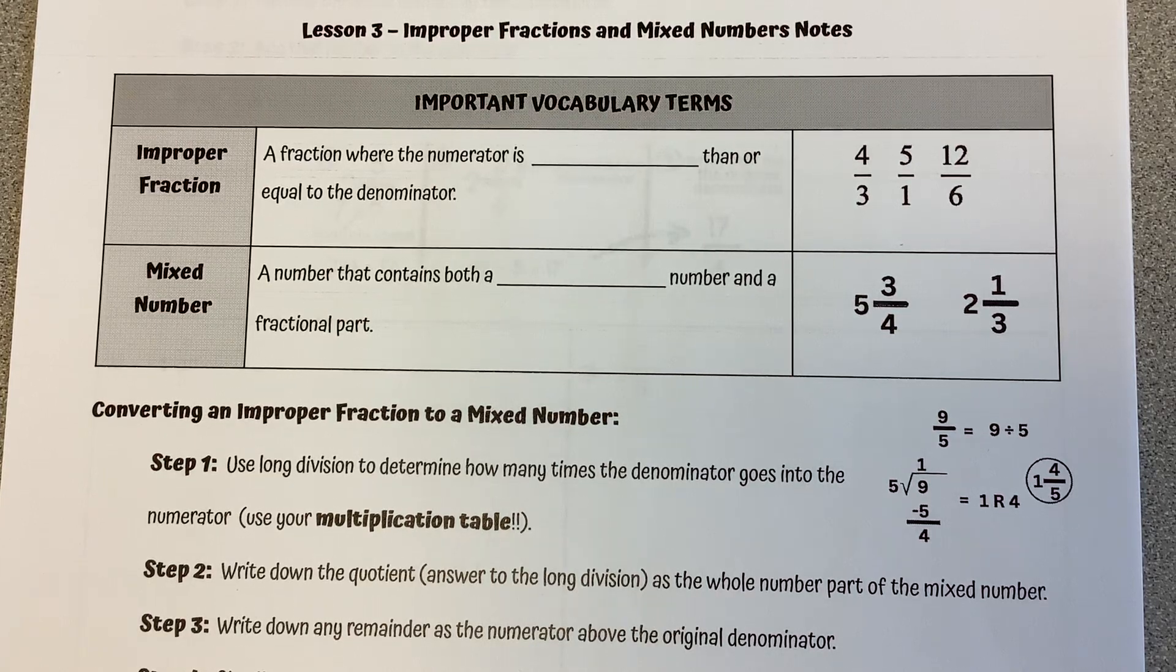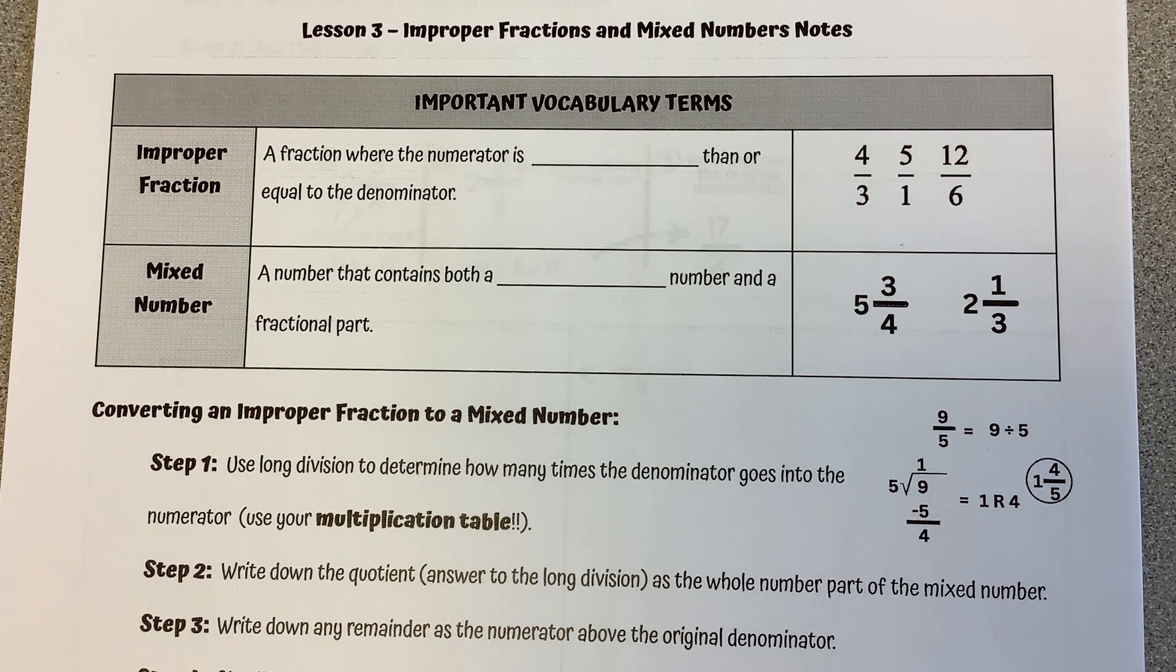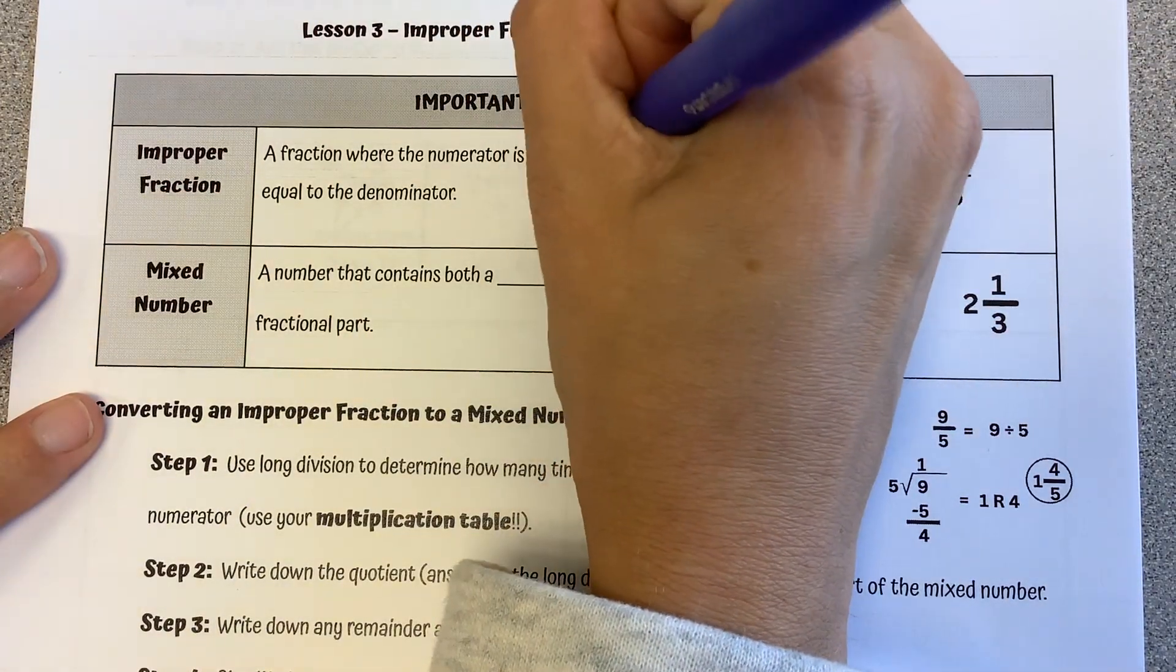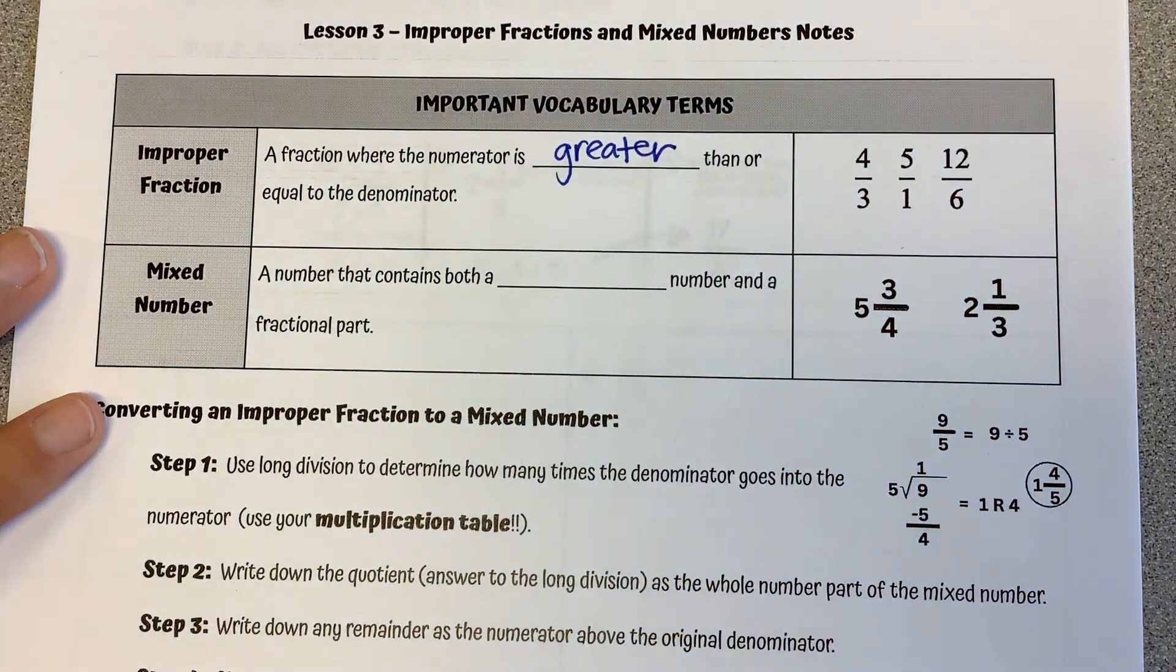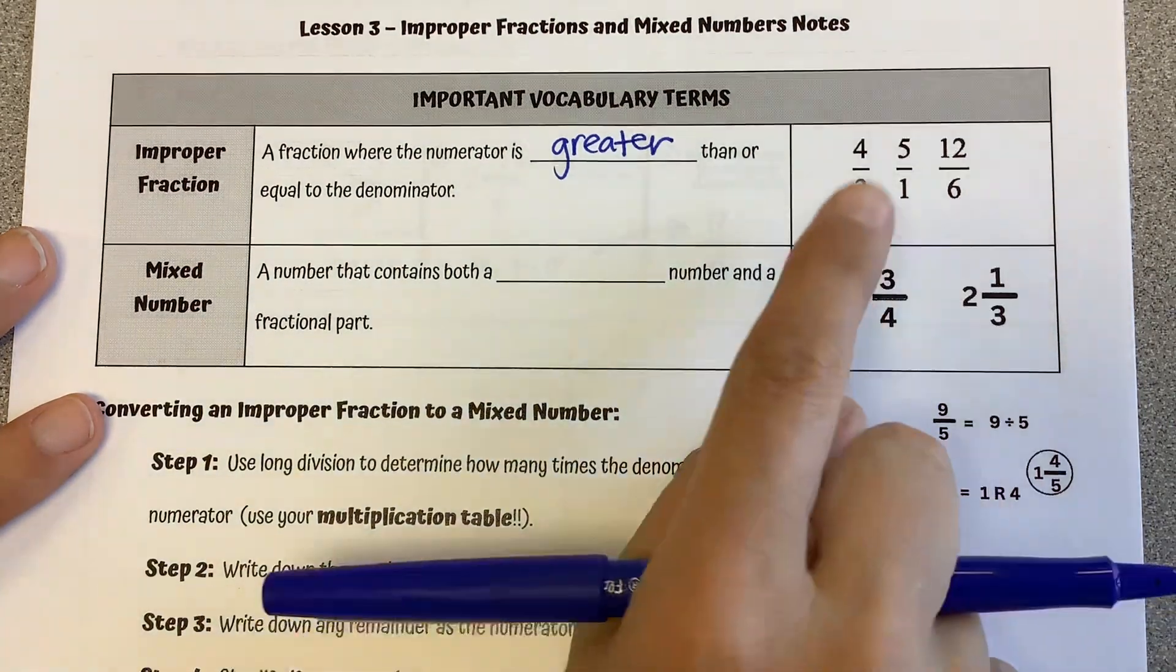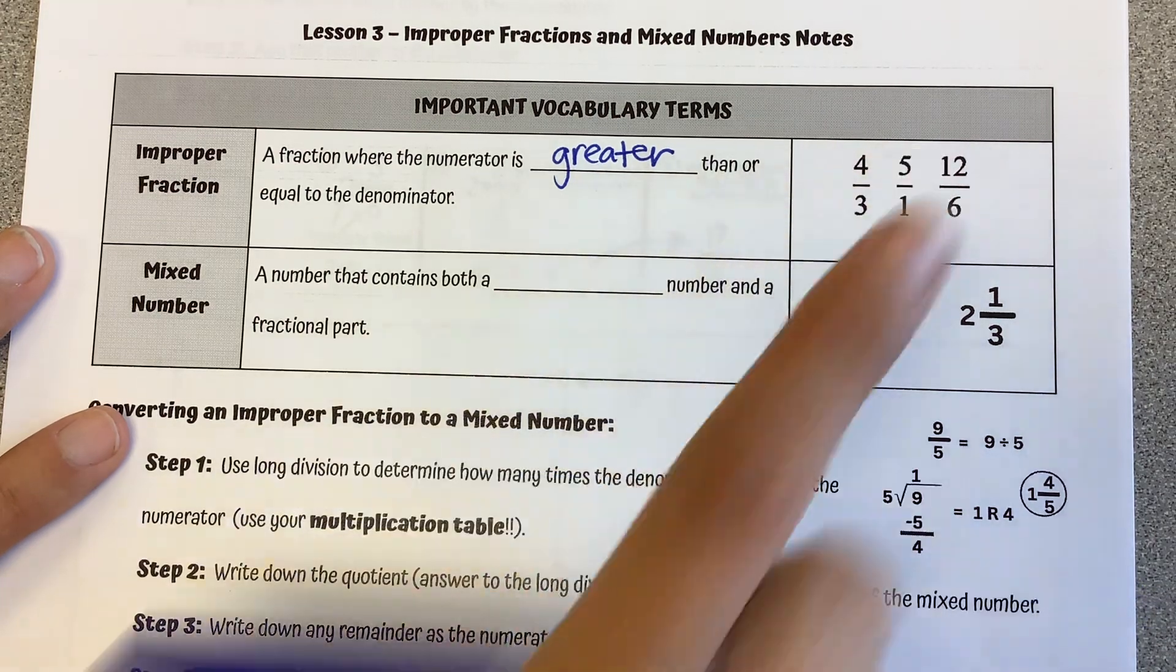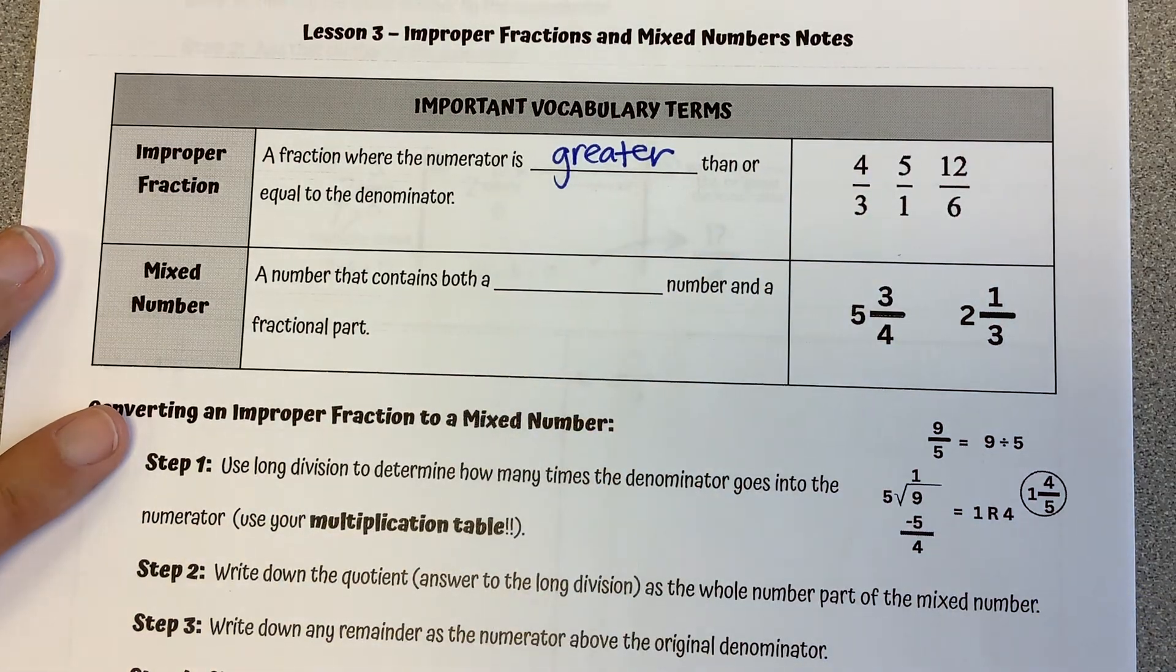For this lesson, we are going to look at converting between improper fractions and mixed numbers. So first up, we have what is an improper fraction? It is a fraction where the numerator is greater than or equal to the denominator. So 4 over 3, 4 is bigger. 5 over 1, 5 is bigger. 12 over 6, 12 is bigger.